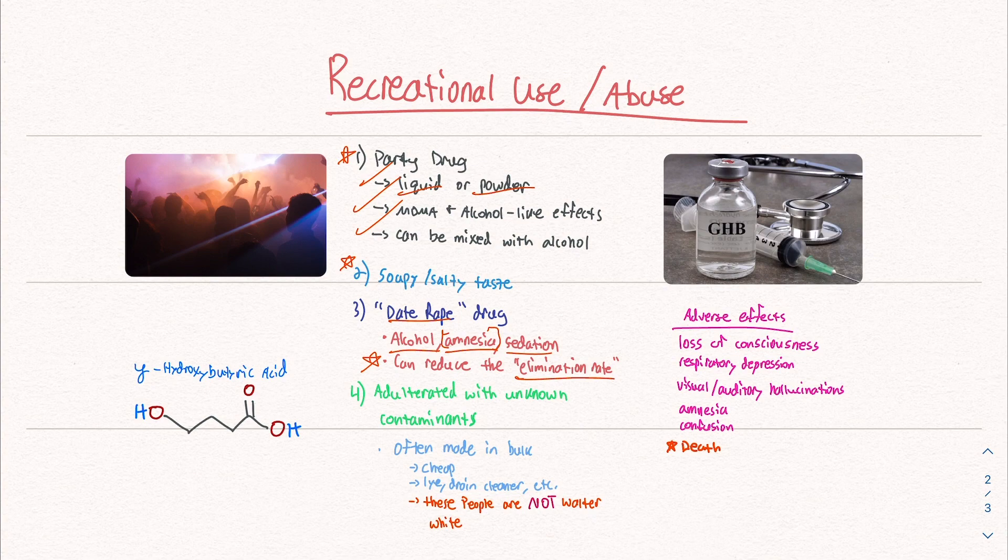GHB can reduce that elimination, which keeps a certain amount of alcohol in our system and GHB, which can exacerbate all of these adverse effects that you don't want, like amnesia and things like that.